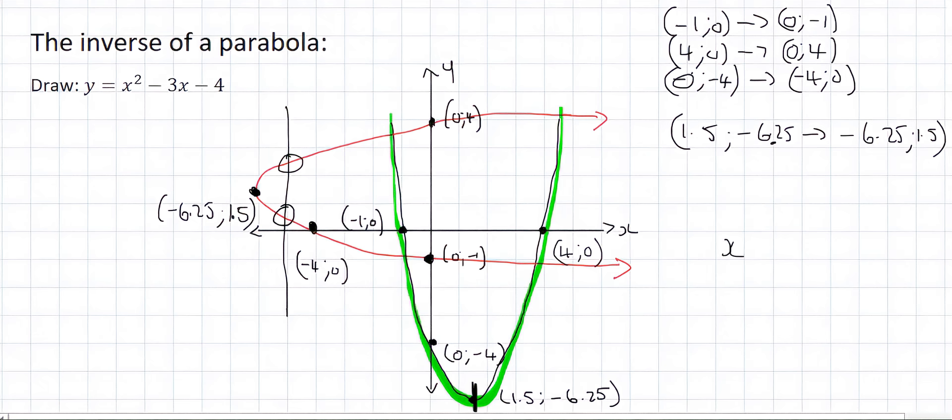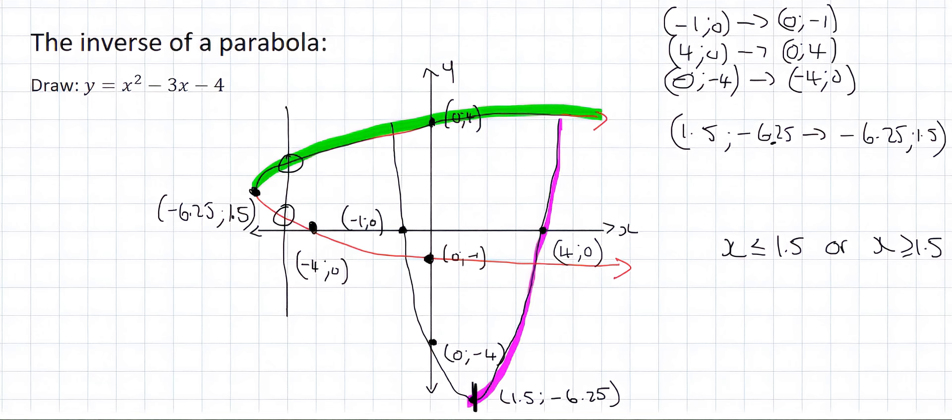So you could either let x be smaller than or equal to 1.5, or you could let x be greater than or equal to 1.5. Because if we only took the inverse of this purple section, then we would end up with this part over here. And if we took this section, then we would end up with this part over here.